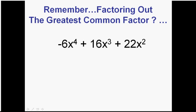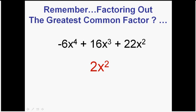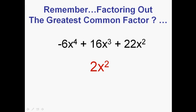Okay, remember factoring out the greatest common factor? First thing we did was find the greatest common factor. Looking at all three terms 6, 16, and 22, the biggest number that goes into all three is 2.